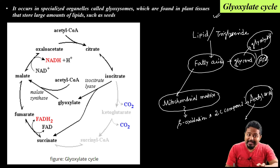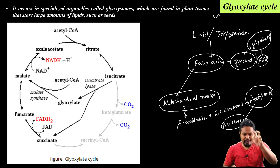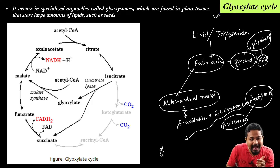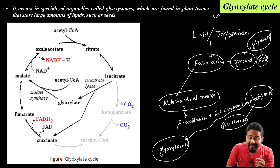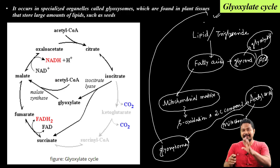So acetyl-CoA is formed in the mitochondria. But the glyoxylate cycle occurs in the glyoxysome. So when acetyl-CoA is formed, it moves from the mitochondria to the glyoxysome, where the glyoxylate cycle takes place.